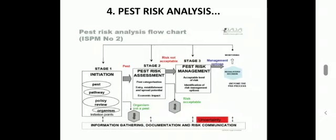This is the whole scenario of PRA — the pest risk analysis. There are three stages. Stage one is initiation. Stage two is pest risk assessment. Stage three is pest risk management. Sub-points and when to stop PRA are also mentioned within these stages.